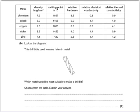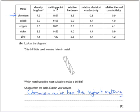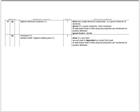This drill bit is used to make holes in metal. Which metal would be the most suitable to make a drill bit? It would need to be very hard and also have a high melting point. Chromium is the best out of those — chromium has the highest melting point and is the hardest.